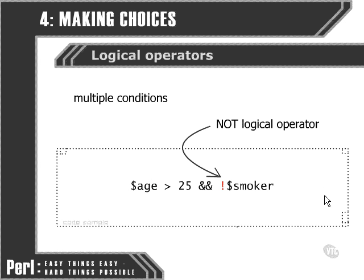We can also use the NOT logical operator. The NOT reverses the truth of whatever it immediately precedes. So in this case, if the value of the variable smoker is true, then this condition will evaluate false. This is a way of succinctly expressing the fact that we want a non-smoker as a potential housemate.